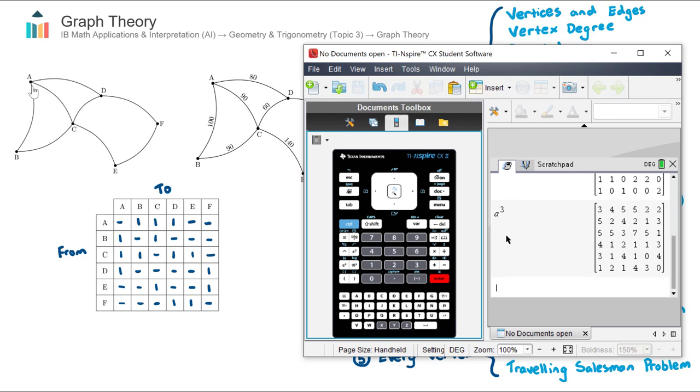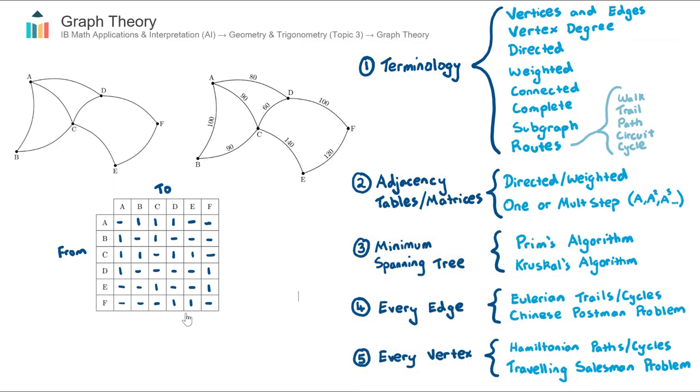So a three-step route would be A to D, D to F, F to E. So very valuable. Understanding how to create an adjacency table and then raise that matrix to the power to find a multi-step route.